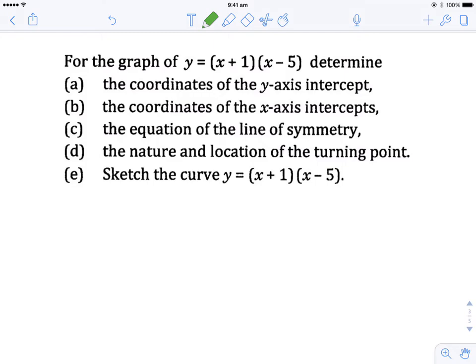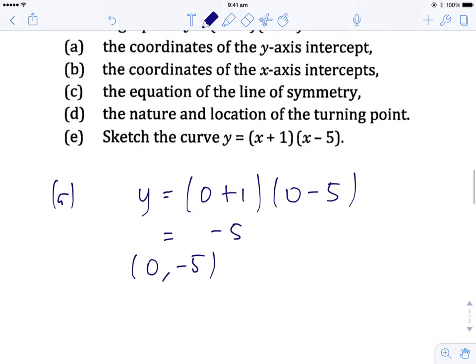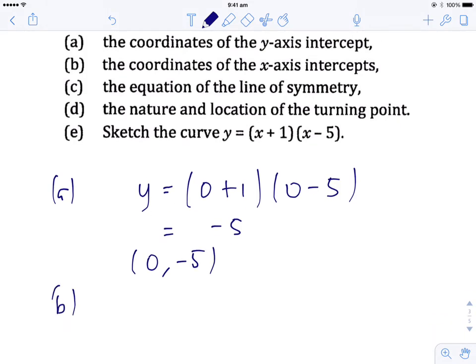This example, however, we're going to go straight to the x and y-intercepts because it's really easy to read them off if you've got the equation in this form here. So the y-axis intercept, again, for this one here, substitute 0 in there. 0 plus 1 is 1. 0 minus 5 is negative 5. 1 times negative 5 is negative 5. So that is the point where this graph will go through the y-axis.